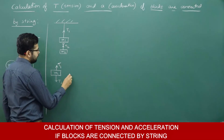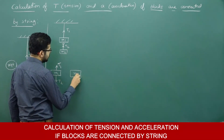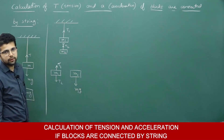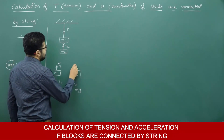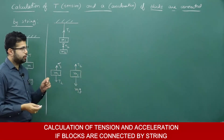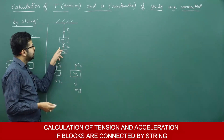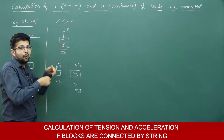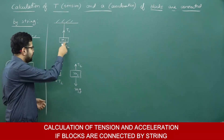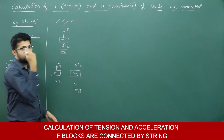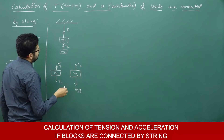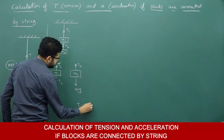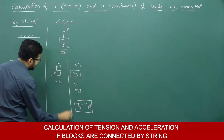For the free body diagram of m2: the weight of m2 is acting downwards — m2g is downwards. T2 is acting upwards. You should observe what this string is doing: this string is pulling m2 up and pulling m1 down. So with respect to m1, T2 is downwards; with respect to m2, T2 is upwards.